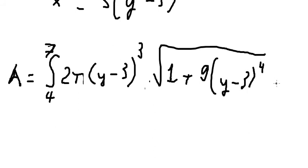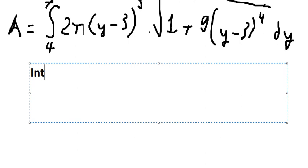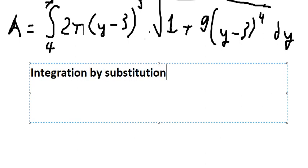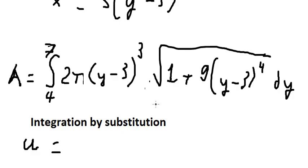We now have 1 plus 9(y minus 3) to the power of 4 inside the square root, with dy. We need to calculate this integral, so we can use integration by substitution. I will let u equal this square root expression.